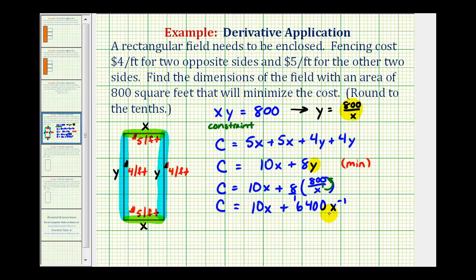Now let's find the derivative. C prime is going to be equal to the derivative of 10x is 10. We'll apply the power rule, so we'll multiply by negative one, and we'll have minus 6400 and then x to the power of negative one minus one, which would be x to the power of negative two, which we could write as C prime equals 10 minus 6400 over x squared.